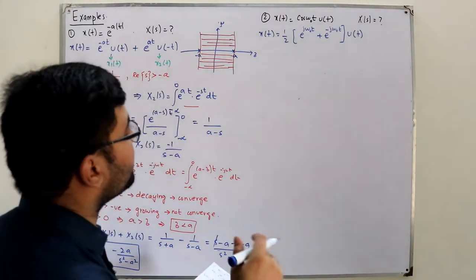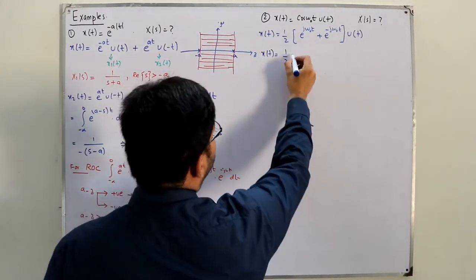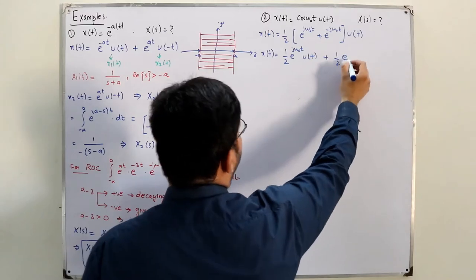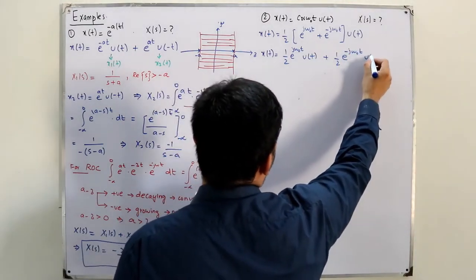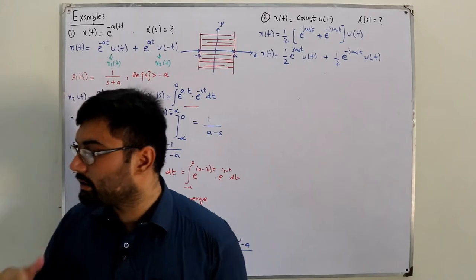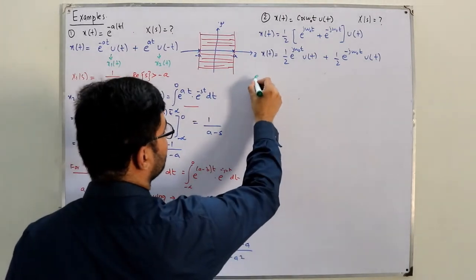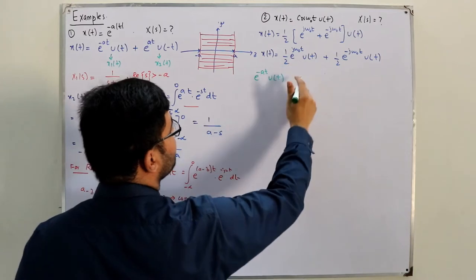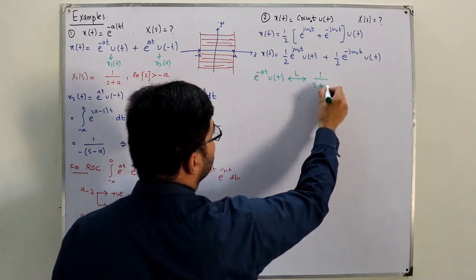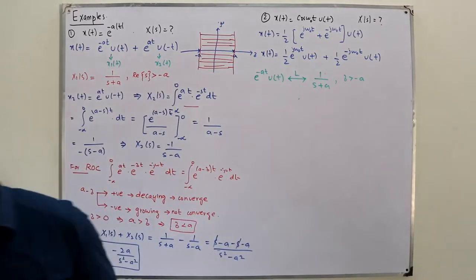We write each term in the standard form e^(-at)u(t) ↔ 1/(s+a). For the first term, a = -jω₀, and for the second, a = jω₀. So X(s) = (1/2)[1/(s - jω₀) + 1/(s + jω₀)].